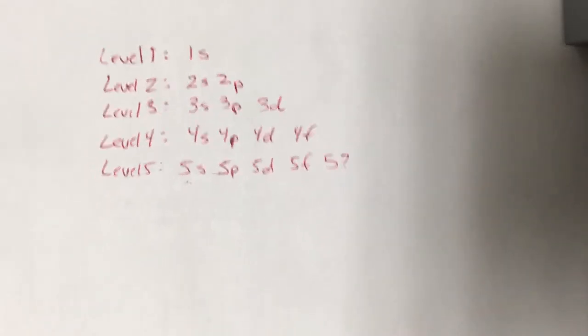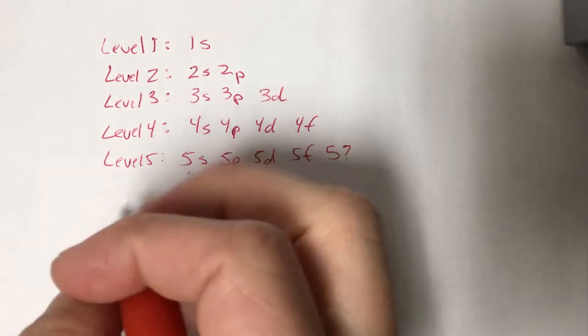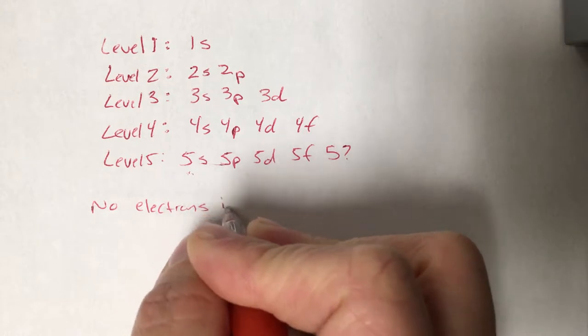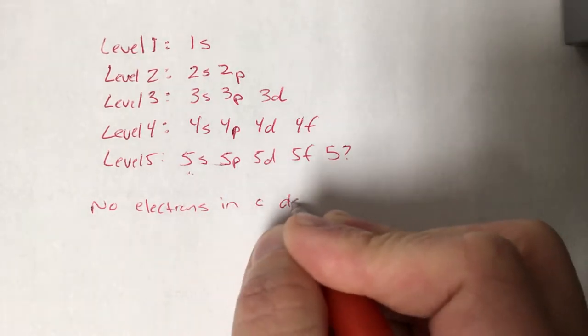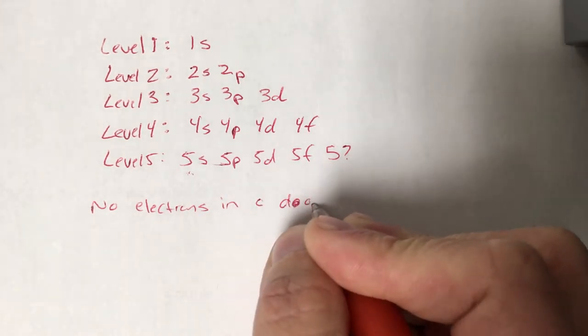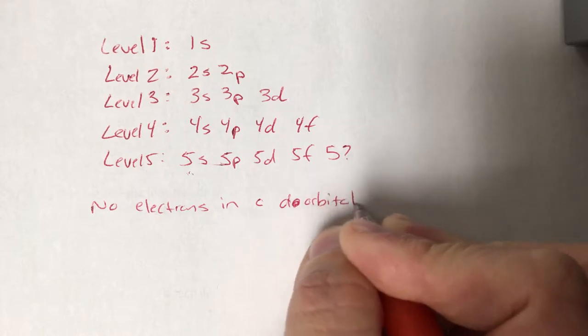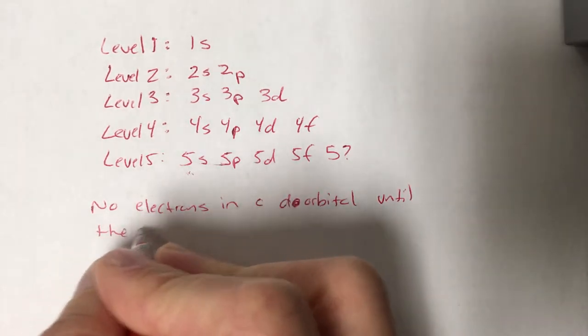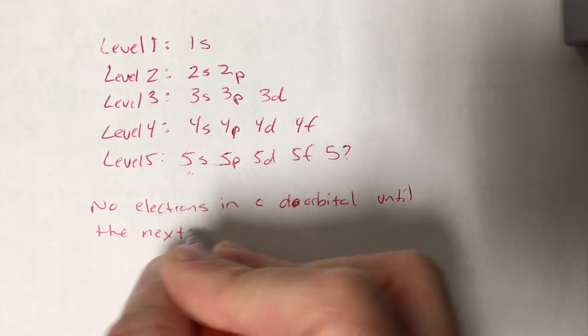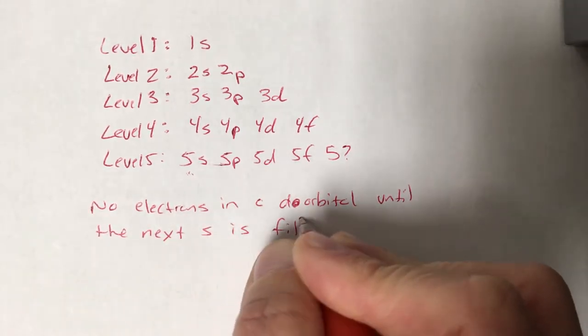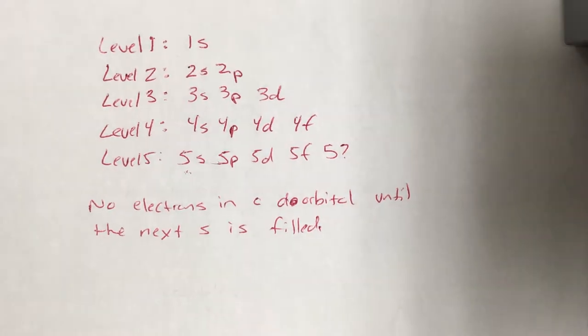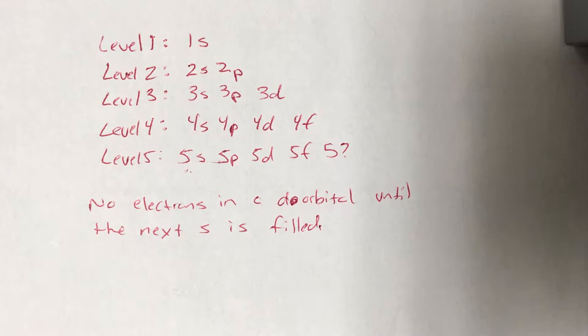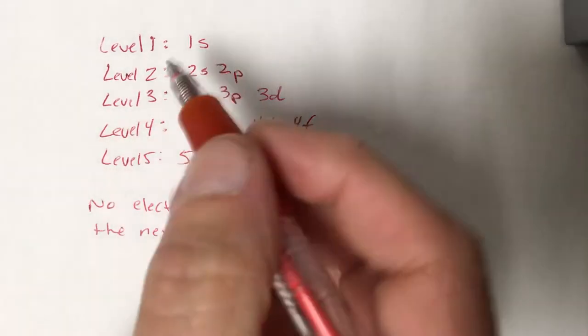Again, the Aufbau principle tells us no electrons in a d orbital until the next s is filled. That's basically what it tells us. No electrons in a d orbital until the next s is filled. So we can make our list just working our way through.